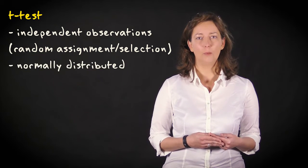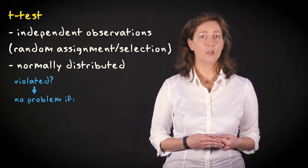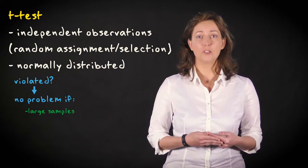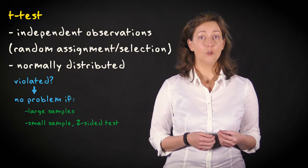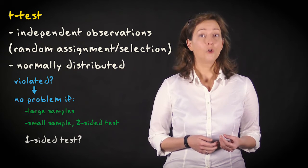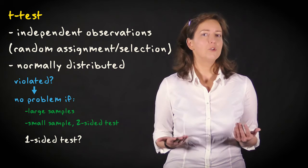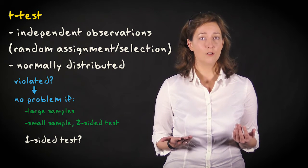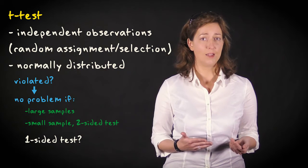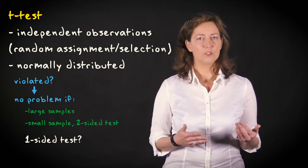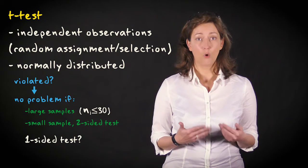Both samples should be distributed normally. However, the t-test is robust against violation of this assumption for large samples due to the central limit theorem. It's even robust for small samples when using a two-sided test. Normality is important if the samples are small and the test is one-sided. There's no simple rule that says what sample size is large enough. It depends on the variation in the population and the true effect size. However, for the purpose of this course, let's say that for one-sided tests, both samples need to have more than 30 cases.